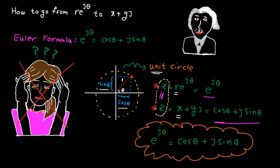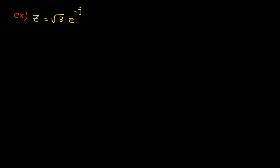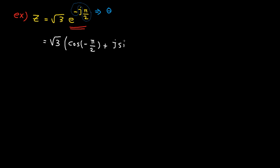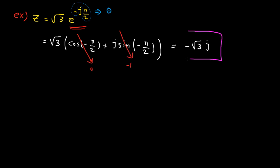Okay, let me repeat this. To go from polar to Cartesian, all you need to do is to use Euler's formula. Example: this complex number is given and the question is what is the representation in the Cartesian format? The angle here is minus pi divided by 2. Based on Euler's formula, we replace the exponential function with cosine and sine. From trigonometry, we know this is 0 and this is minus 1. So here is the final answer.